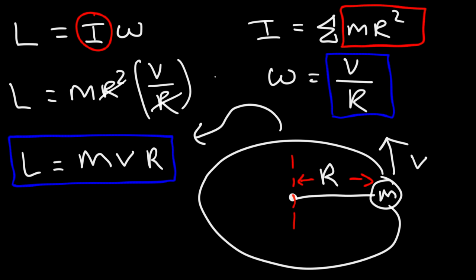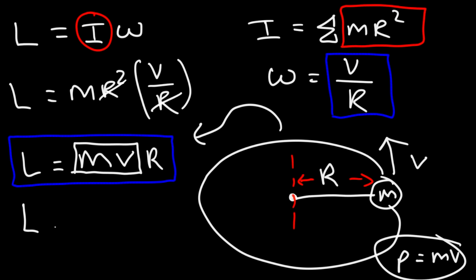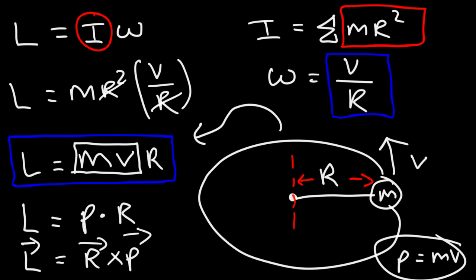Notice that momentum p is mass times velocity, so we can replace m times v with p. Angular momentum is basically the product of linear momentum times the radius of the circle. As a vector, you might see it written as r cross p, but that's for physics with calculus. If you're only concerned about the magnitude of angular momentum, just multiply the linear momentum by the radius of the circle, which is sometimes referred to as the lever arm.